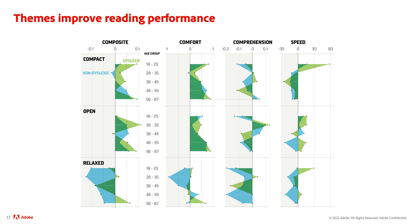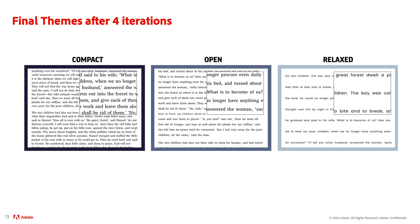We have conducted reading effectiveness tests with the three reading themes. We found that for each user segment, there is at least one theme that outperformed the default reading experience commonly offered by text editing softwares. Our set of core reading themes is the result of feedback collected from hundreds of crowdsourced participants, and we show that they represent diverse reading experiences and also bring reading performance improvements.